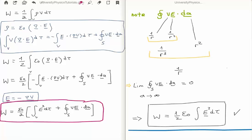We know that the electric potential, it goes down at one over r. We know that the electric field goes down at one over r squared. Their product goes down at one over r cubed. The surface area grows at one over r squared.